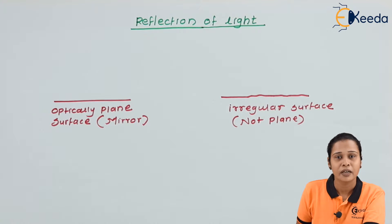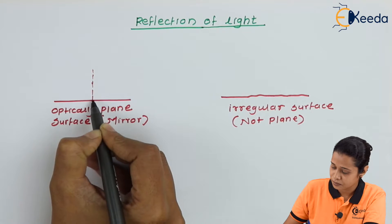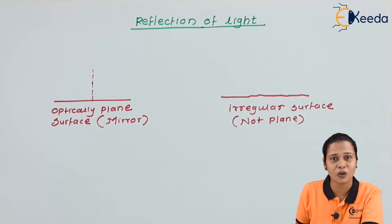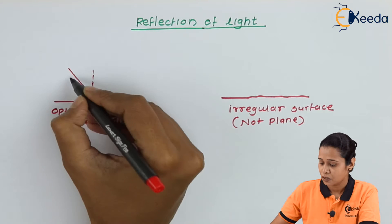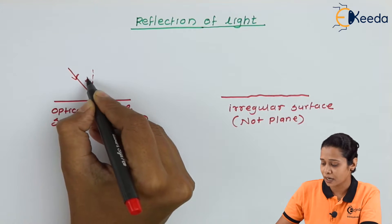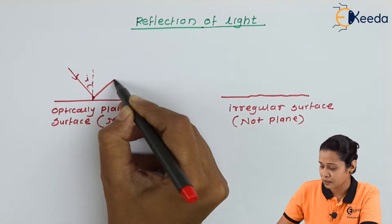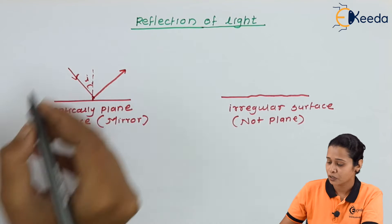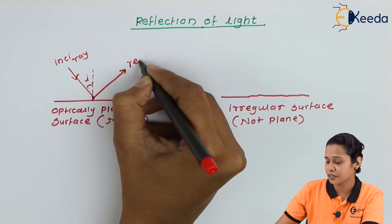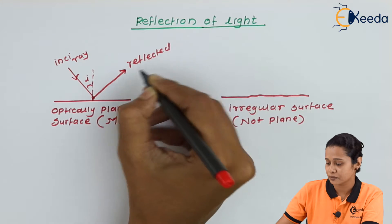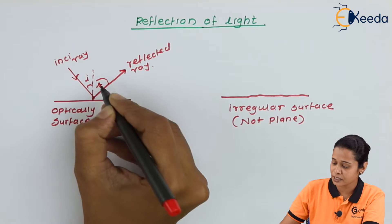Now, in the first case, let us consider the normal. The ray of light will be incident on the surface, making an angle I — that is, the angle of incidence. At this point it will reflect back into the medium. So this is the incident ray, and this one is the reflected ray.